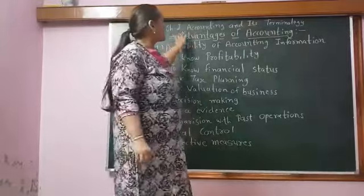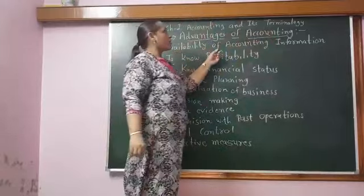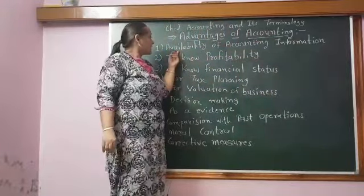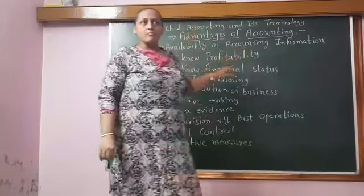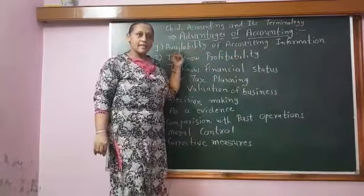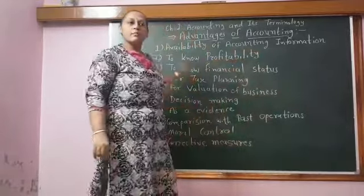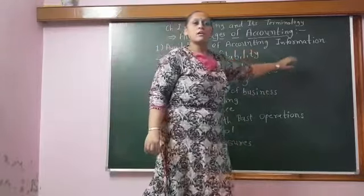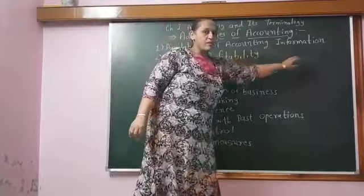That's why we are writing books of account. The very first advantage of accounting is availability of accounting information. That means, as and when we need the accounting information, we can get it from the account. For example, if we want to take a loan from the bank, the bank will ask for our books of account, and it will be readily available. So, information can be given to the bank. This is the first advantage — availability of accounting information.